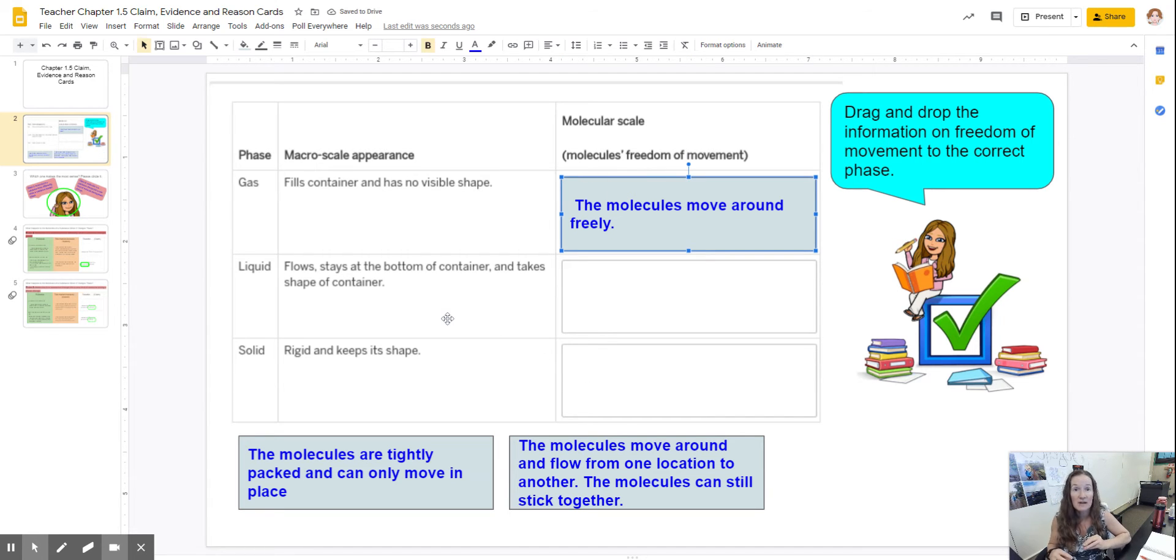For liquid we talked about teenagers or maybe early 20s to 30s. I said Miss Jaquish because I've got some sweet dance moves. They are more like liquids because they flow around each other. You stick to your little group but you're moving very fluidly. So you should drag and drop this into this location.